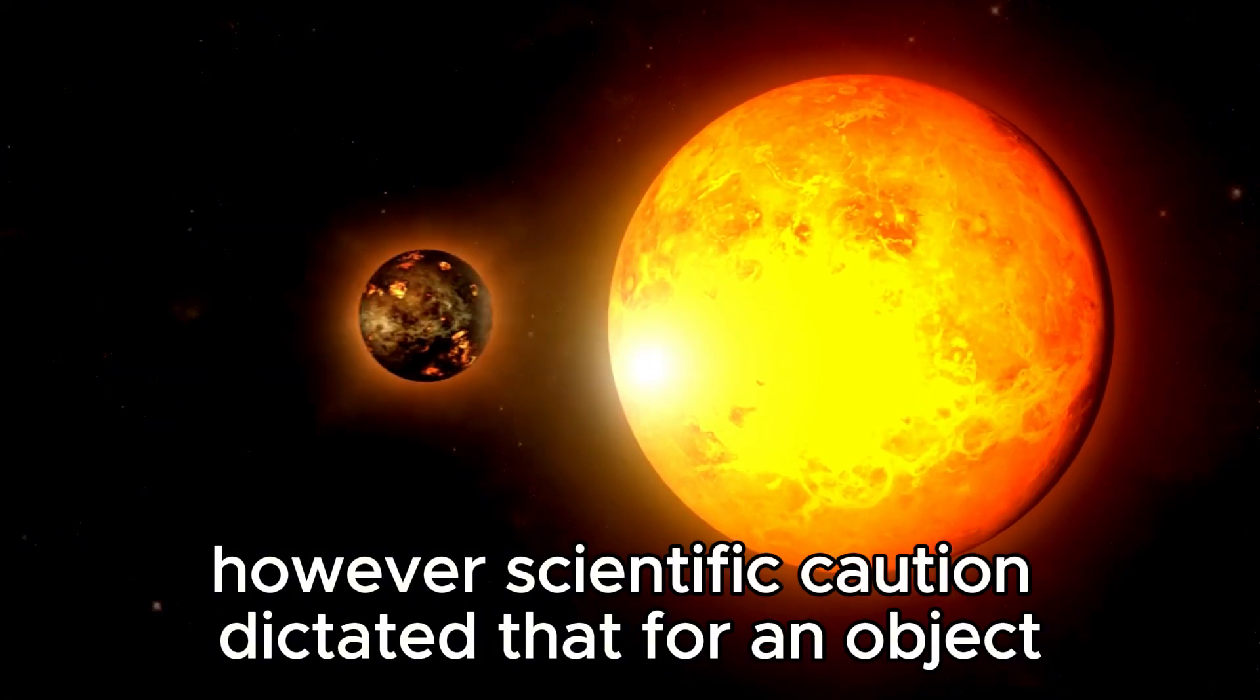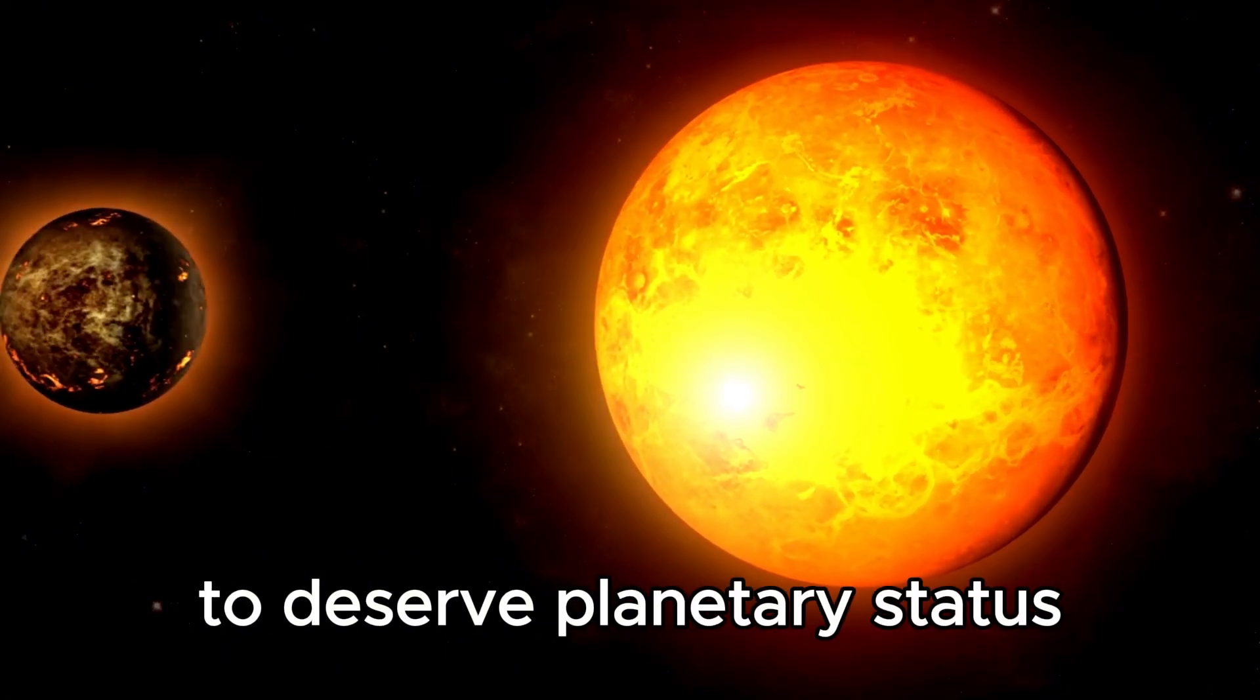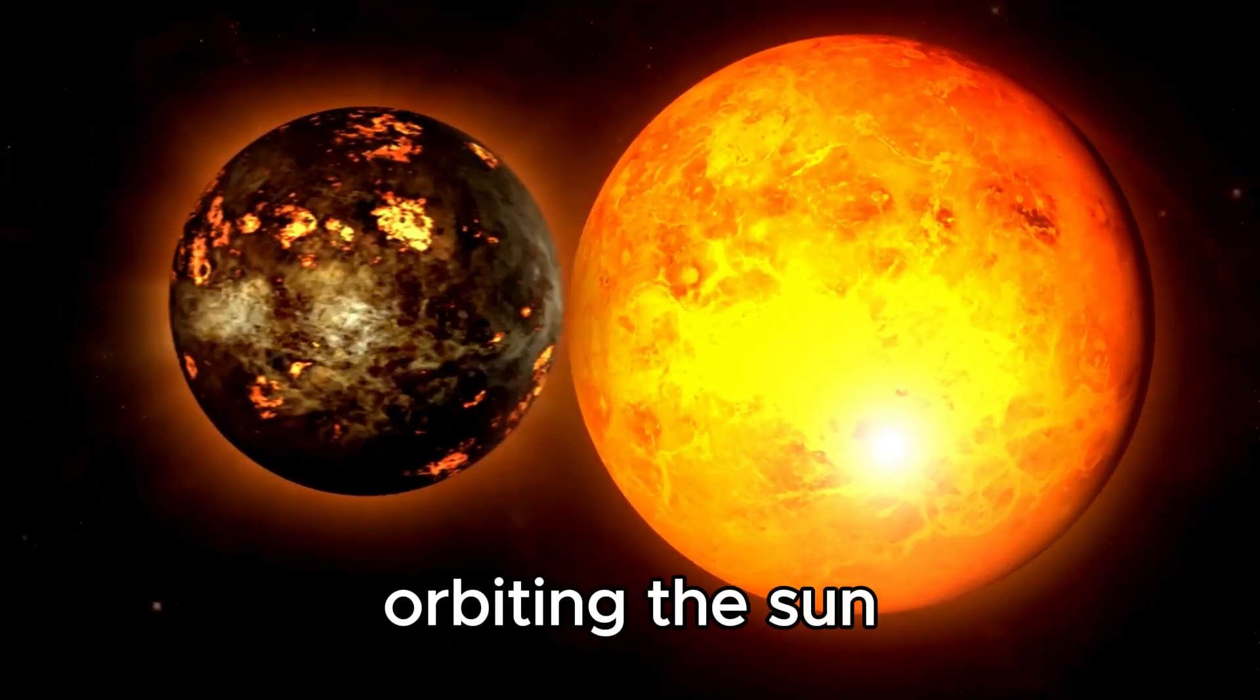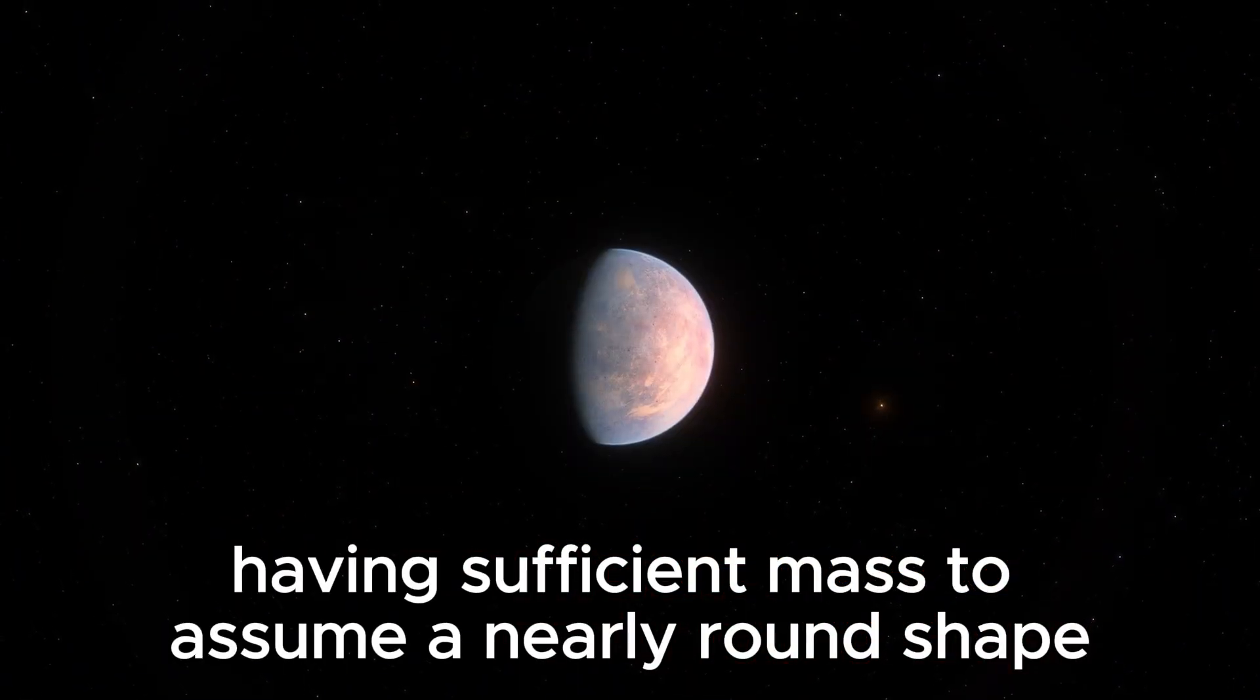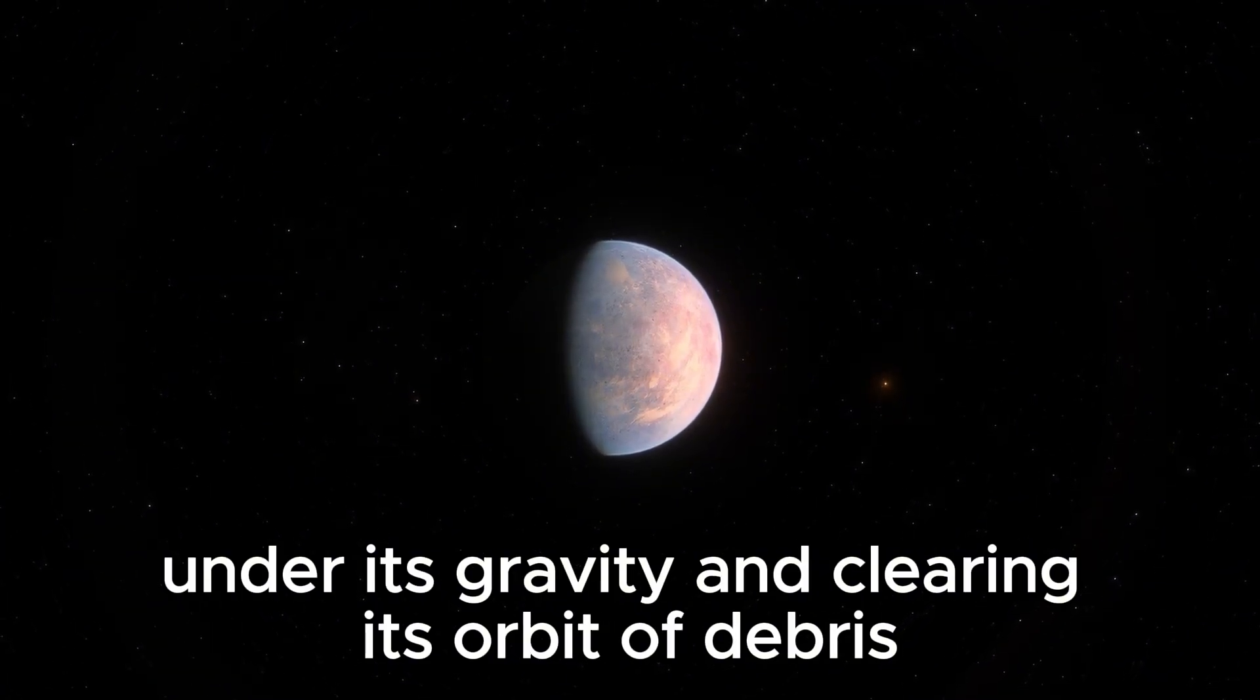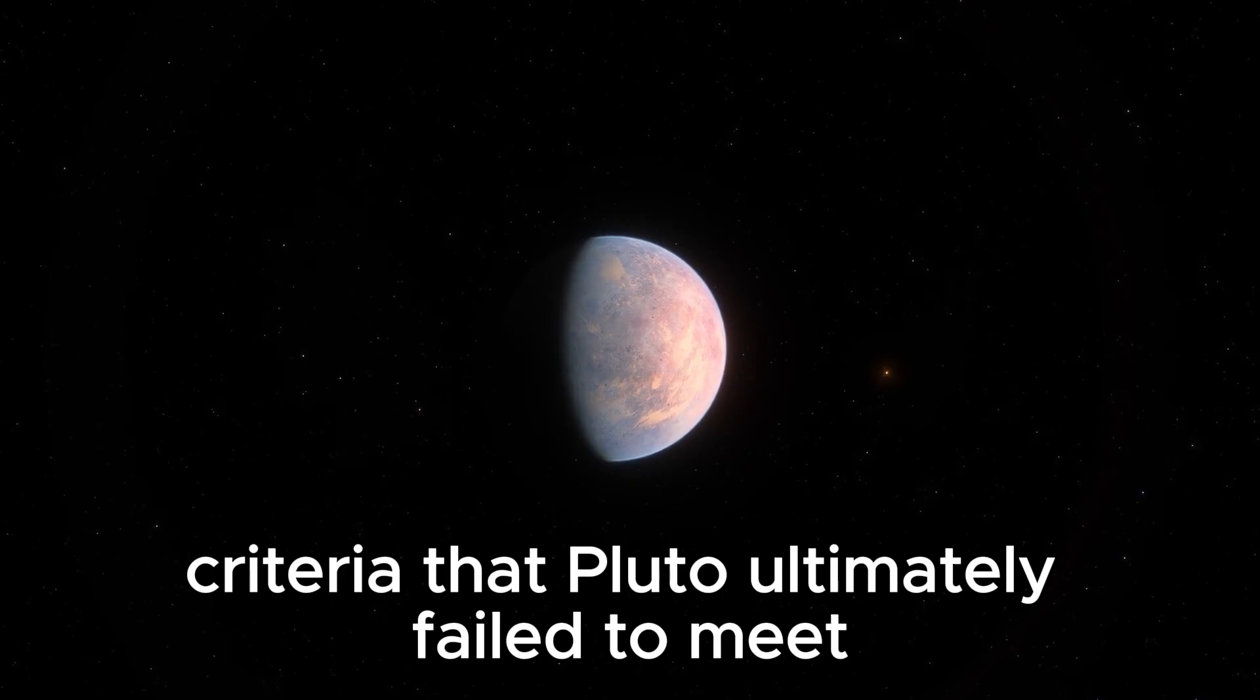However, scientific caution dictated that for an object to deserve planetary status, it must adhere to three key criteria: orbiting the sun, having sufficient mass to assume a nearly round shape under its gravity, and clearing its orbit of debris, criteria that Pluto ultimately failed to meet.